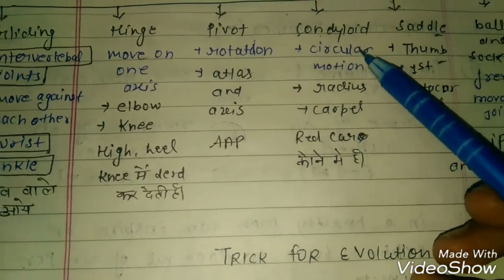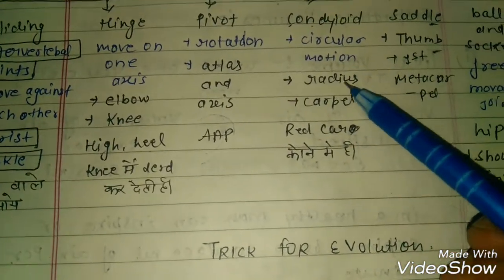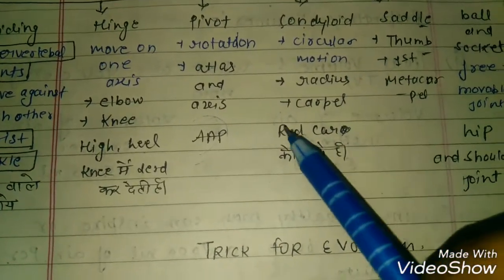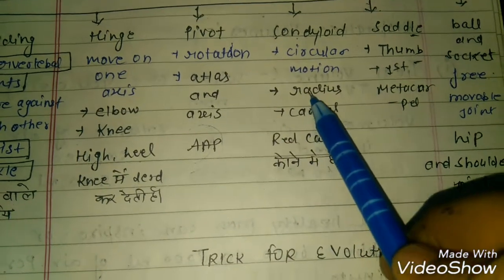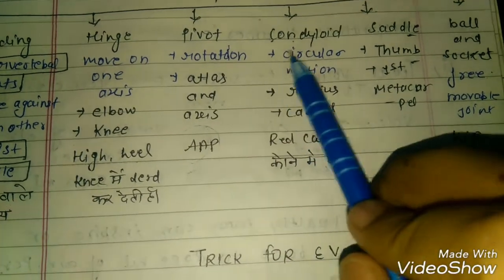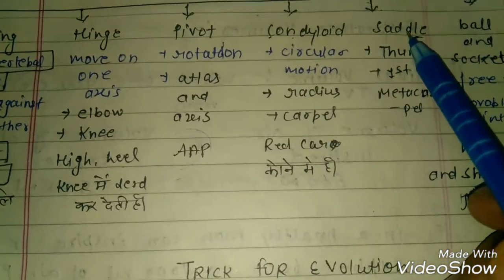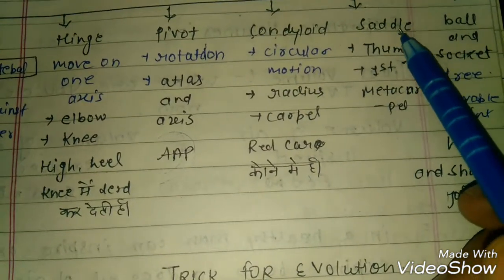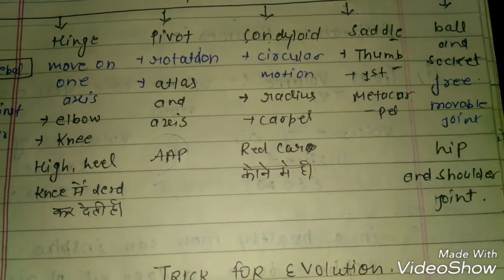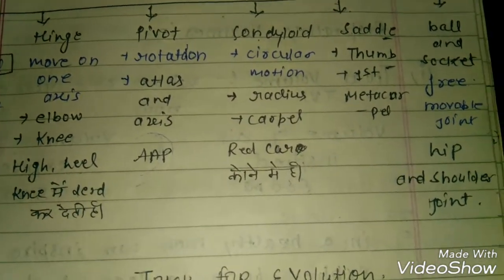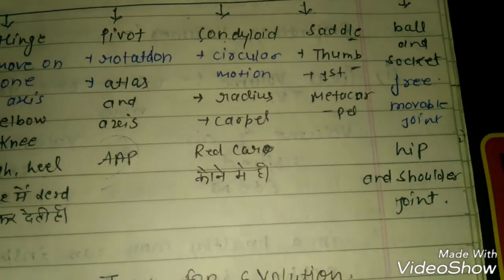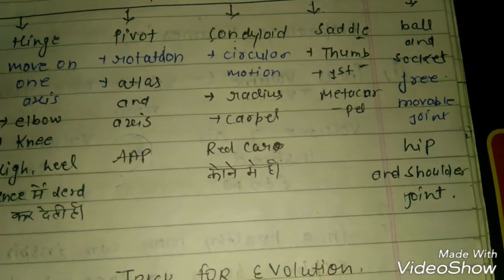Condyloid joints allow circular motion. Example: radiocarpal joint. Saddle joints — the thumb is present at the saddle joint, like a thumb impression on a sandal.